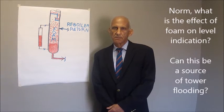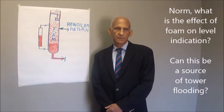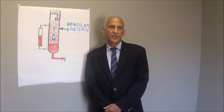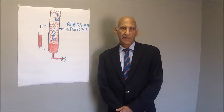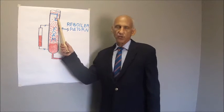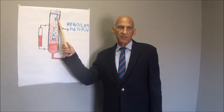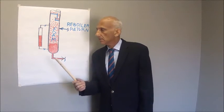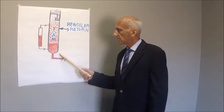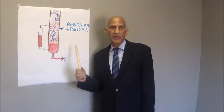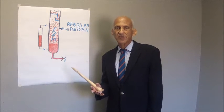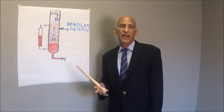Norm, what is the effect of foam on level indication? Can this be a source of tower flooding? Well, actually, foam in the bottom of towers is rather universal. After all, the fluid drained from the bottom tray has just been mixed with vapor, so it's to some extent foam. Also the liquid, if it's coming from a reboiler, will also create foam in the bottom of the tower. So foam pretty much is encountered in many, if not most, towers.